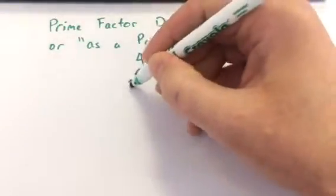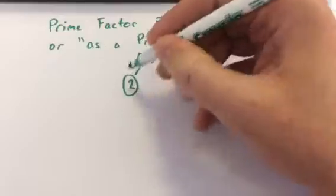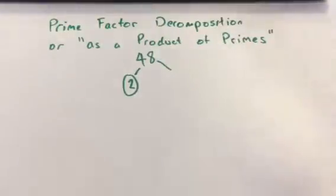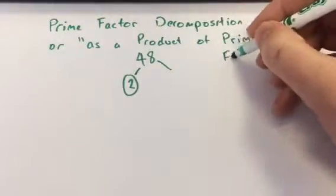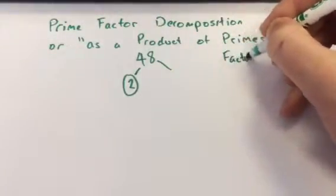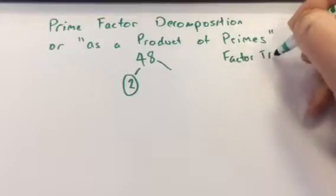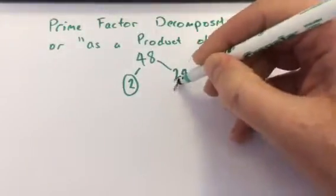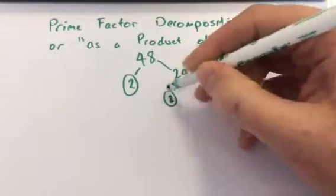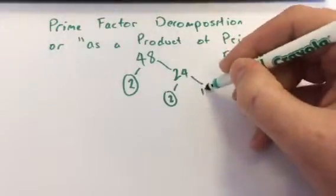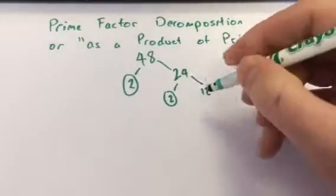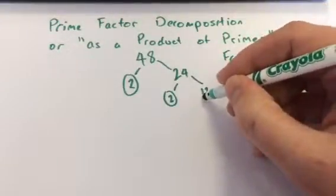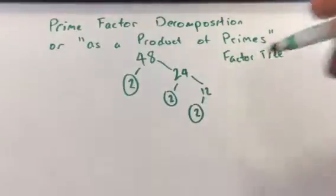Well, it's even, so the first prime number we know could be 2. So we circle it in our prime factor tree. Now we think of what is 48 divided by 2 — it's 24, it's another even one. So we can circle 2 there. That's still even, and we keep making this tree divisible by 2 as long as this number is even.